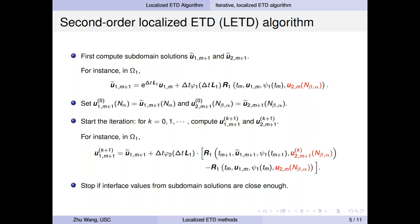At the next step, we perform the second stage of ETD2 method. And this solution will use the results from the first step, that is U1 tilde and U2 tilde, and also uses updated boundary conditions. So this step will repeat until interface values from subdomain solutions are close enough.